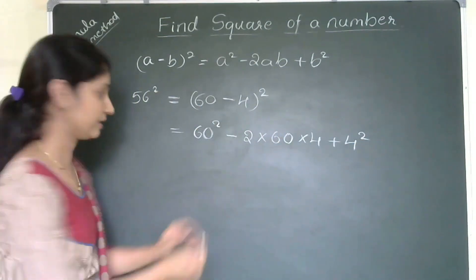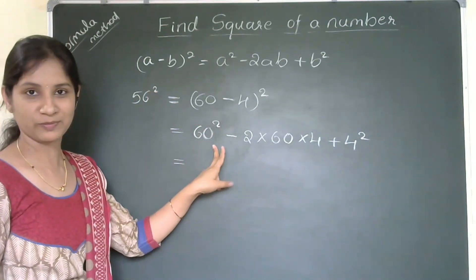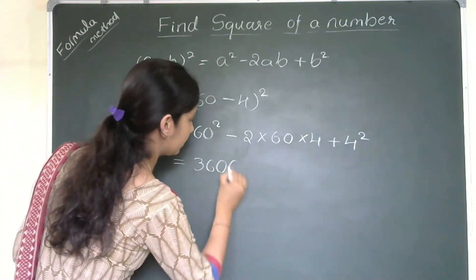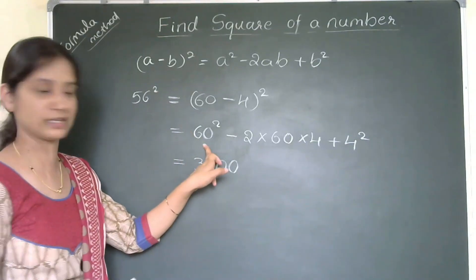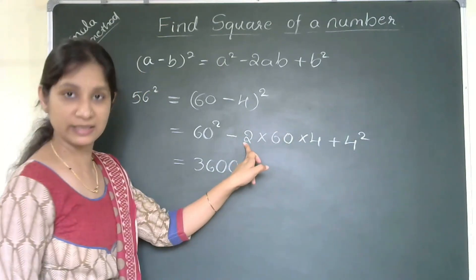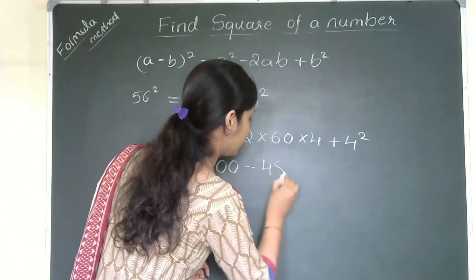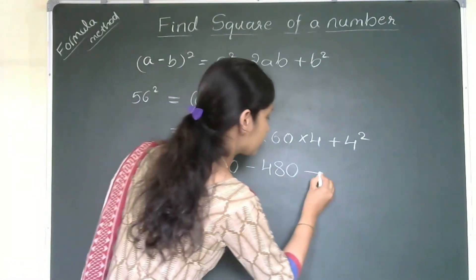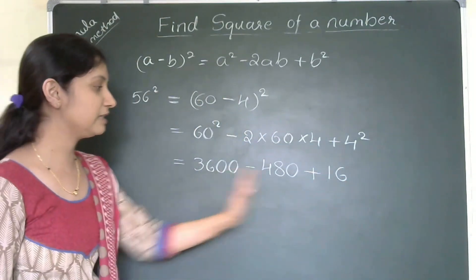Now we can solve this. 60² is just 6² with two more zeros, so that is 3600. Then 2 × 60 × 4: 2 times 4 is 8, and 8 times 6 is 48, so that gives 480. And 4² is 16.